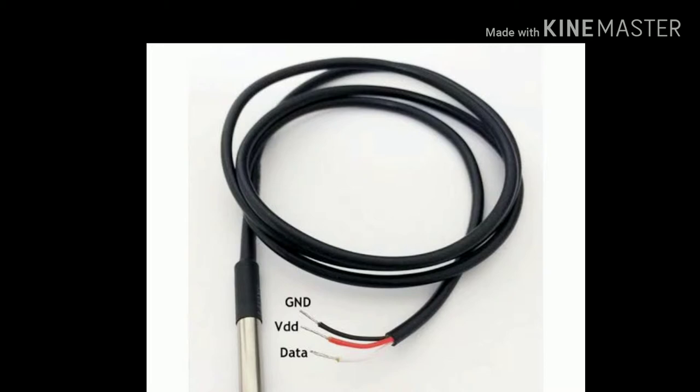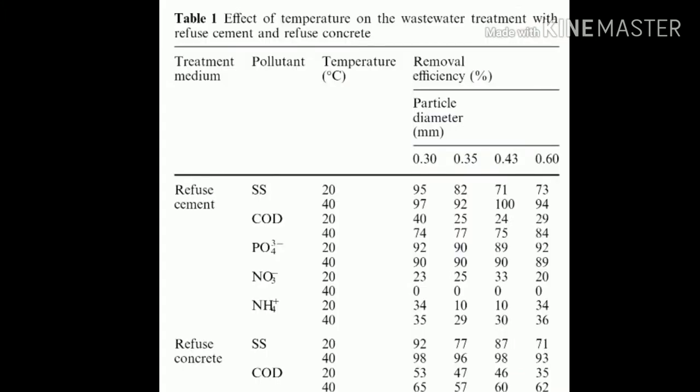We use DS18B20 temperature sensor to measure the temperature of the slurries or effluent discharging from industry, because indirectly it affects the fertility of the soil. As we know in chemistry that temperature acts as a catalyst. There are certain norms decided by the government that the temperature of the slurry should not exceed 50 degrees Celsius.